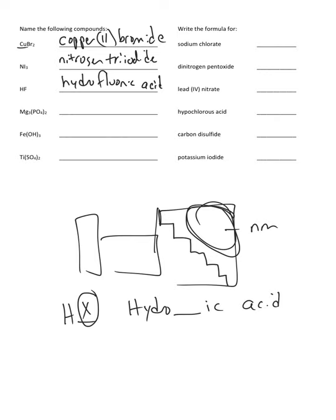Next: Mg(PO4). Mg is magnesium — a metal and an ionic compound, so we just name it. The first element we always name with its elemental name. PO4 in parentheses tells us it's a polyatomic ion — PO4 is called phosphate. So this is magnesium phosphate.